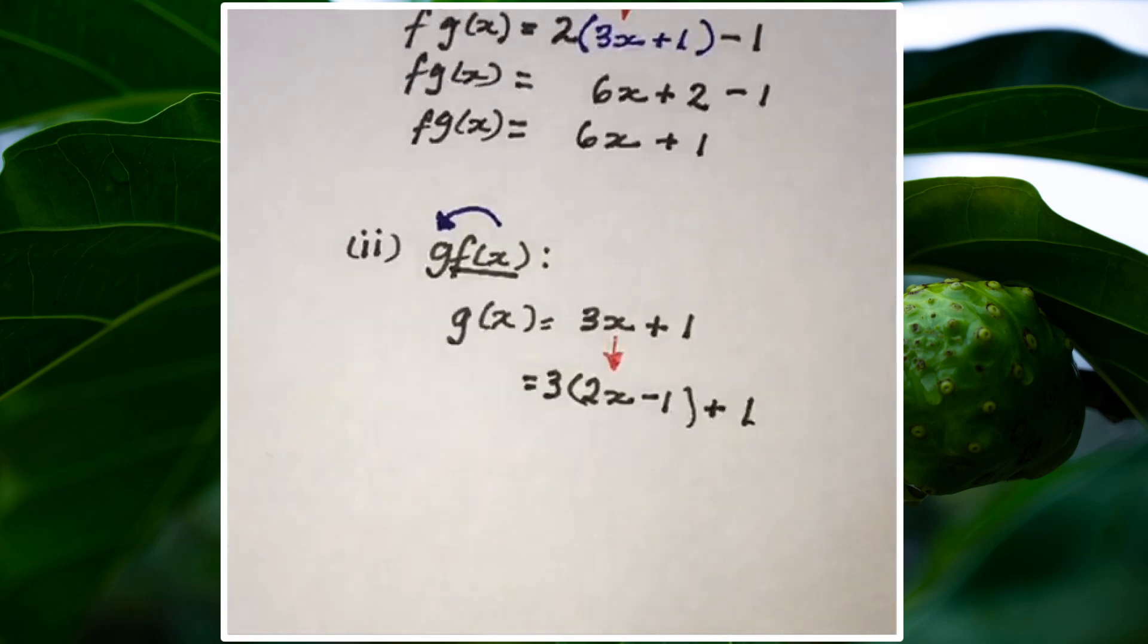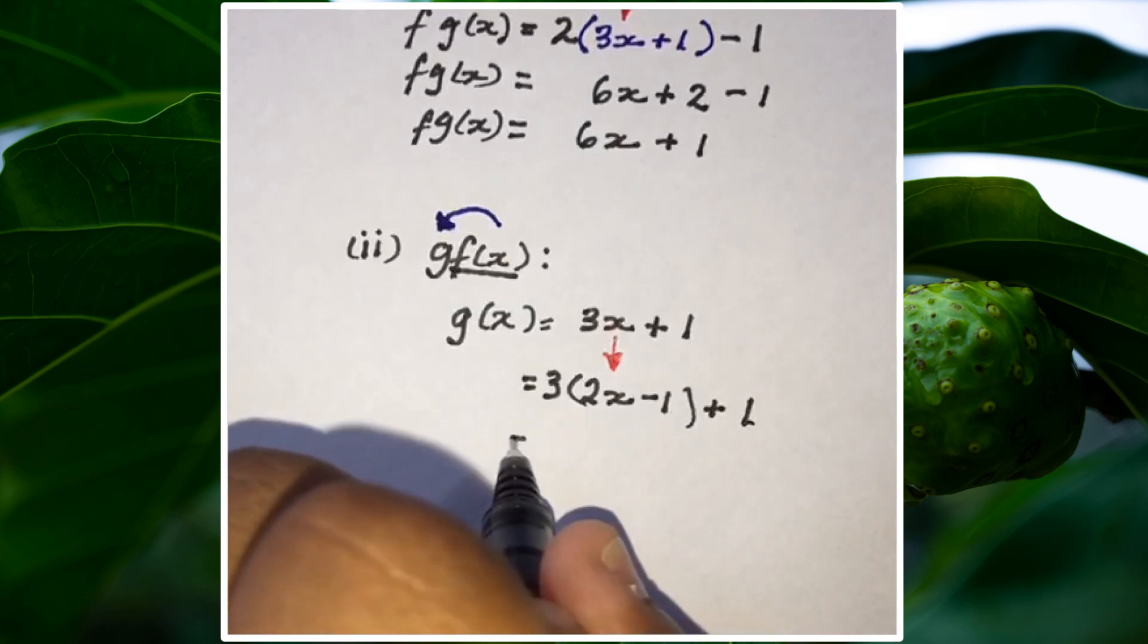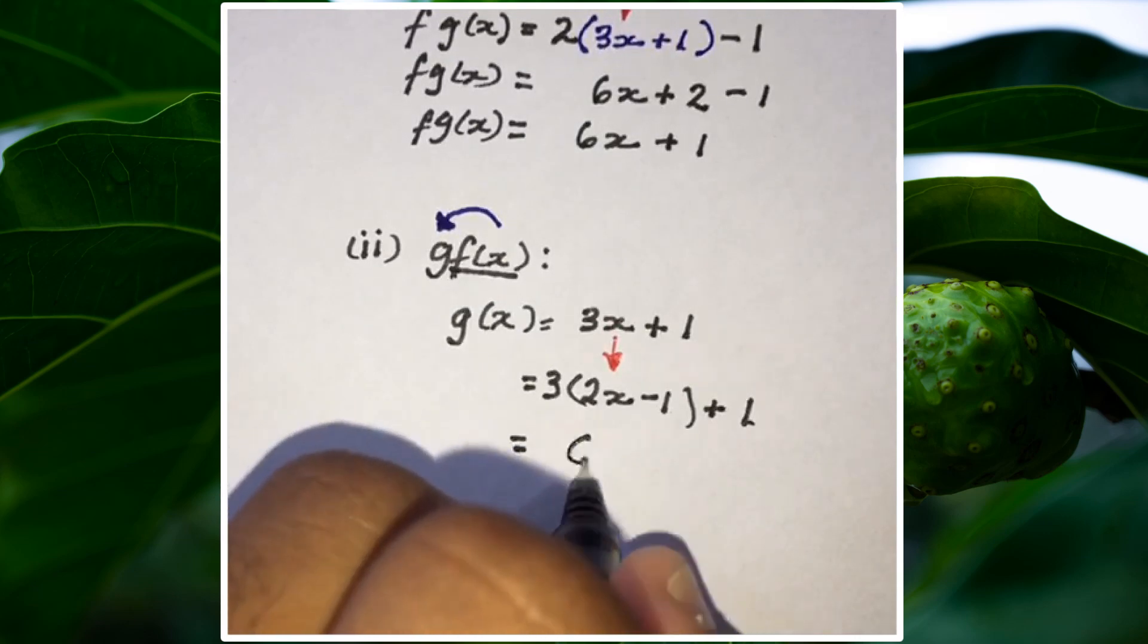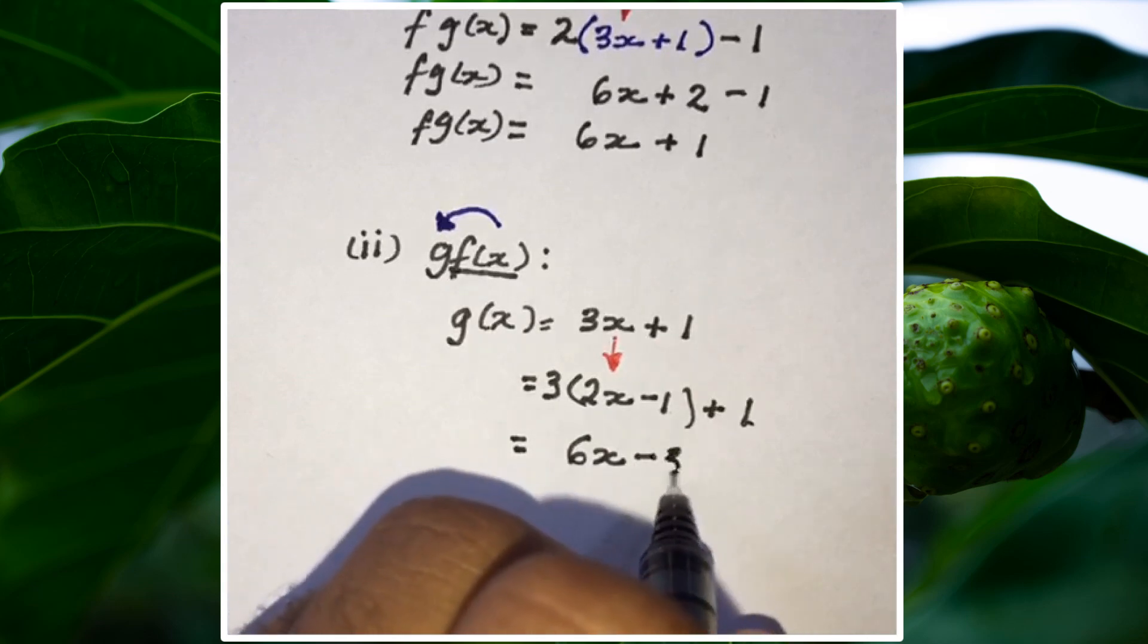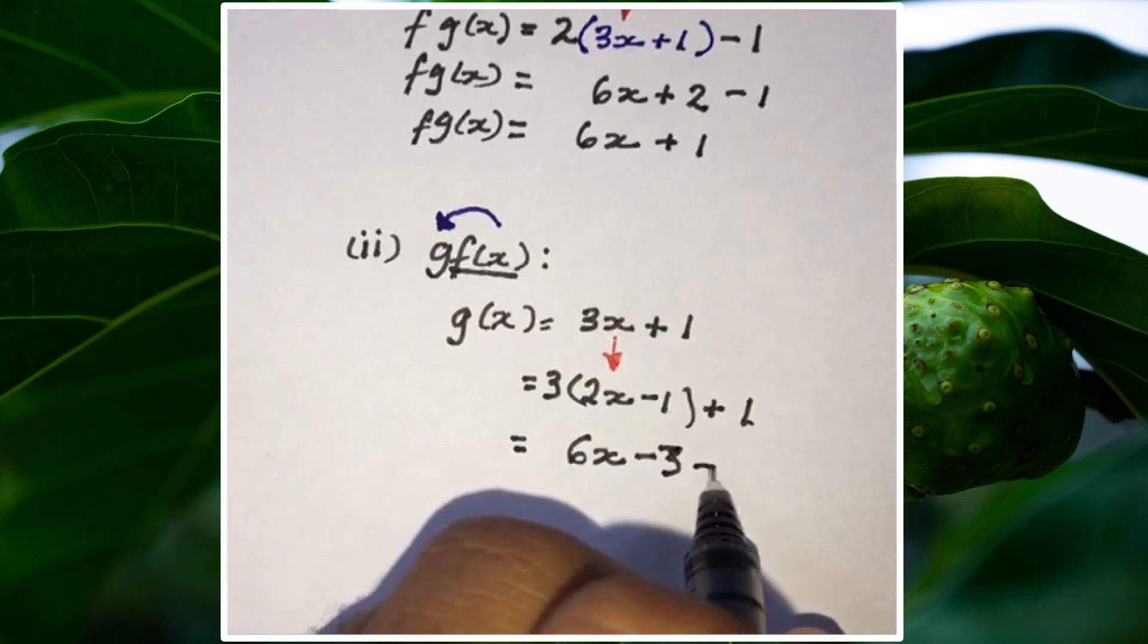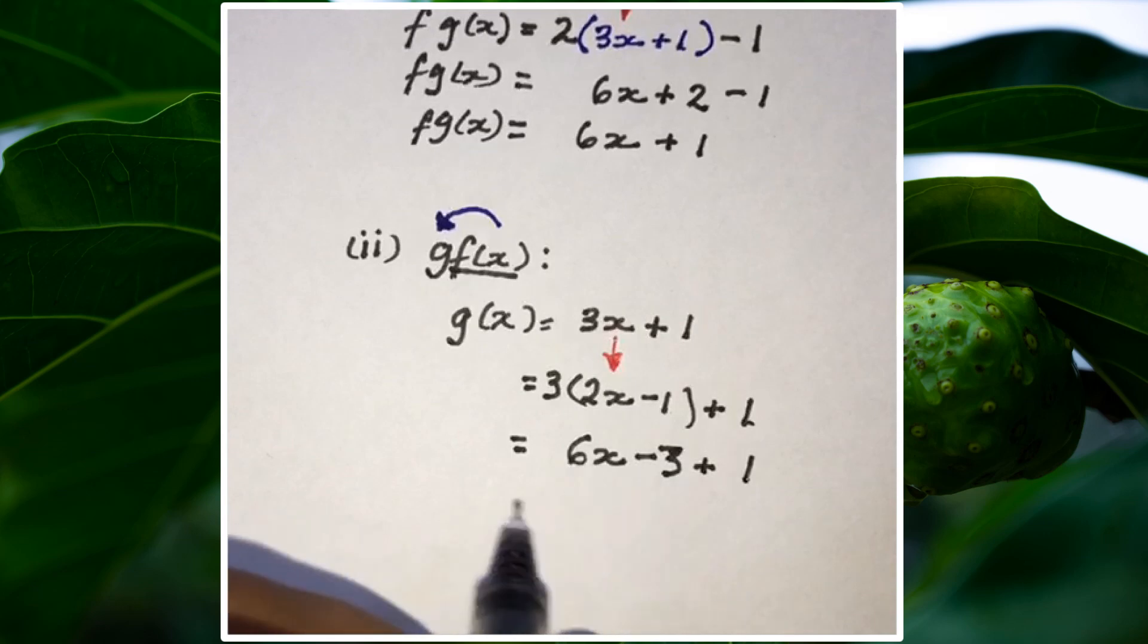All I have to do now is expand those brackets. 3 times 2x gives us 6x. 3 times negative 1 gives us negative 3. And we'll have this plus 1 on the outside. So we're grouping the like terms now.